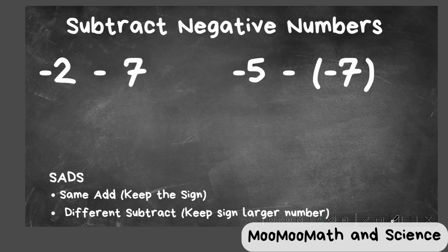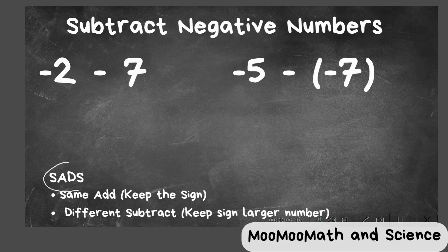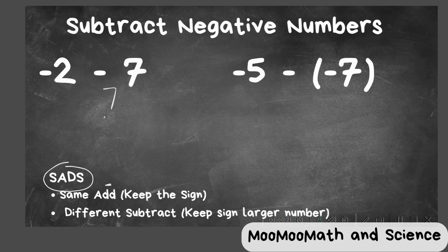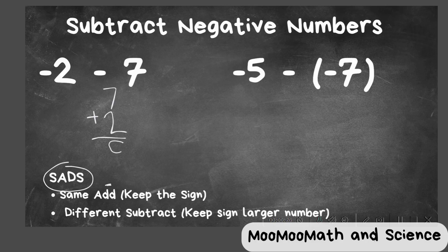Okay, on these next two, let's go ahead and apply the same rules of SADS. We have a negative 2 and a negative 7, so we have the same sign. So we are going to add and keep the same sign. If you'll notice, always place the largest number on top, so 7 and 2, and we're going to add. That gives us 9, and we're going to keep the sign of negative, so it becomes negative 9.